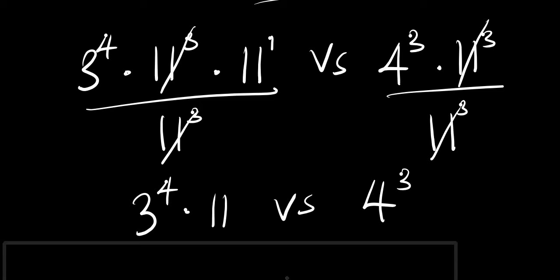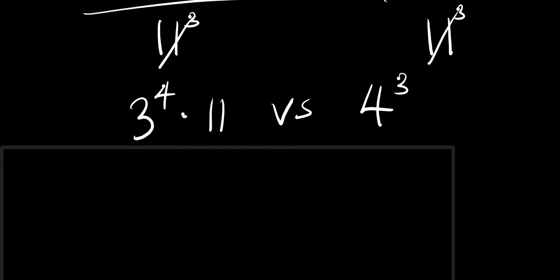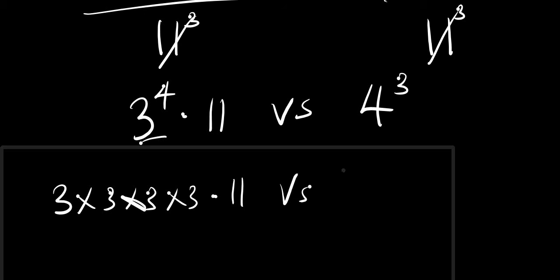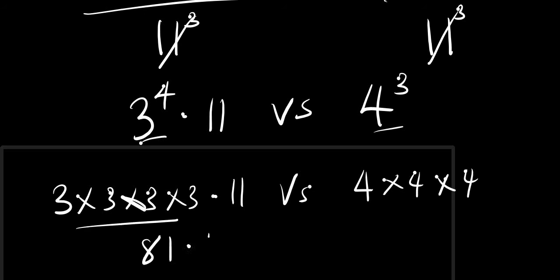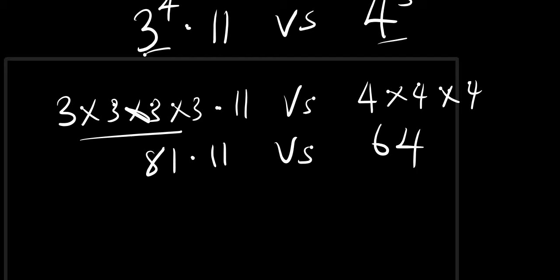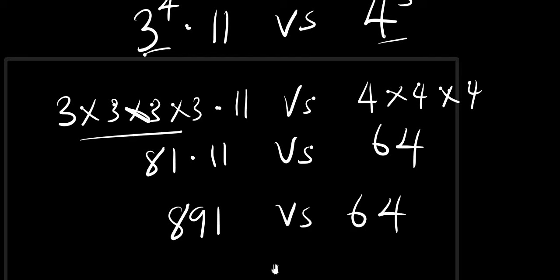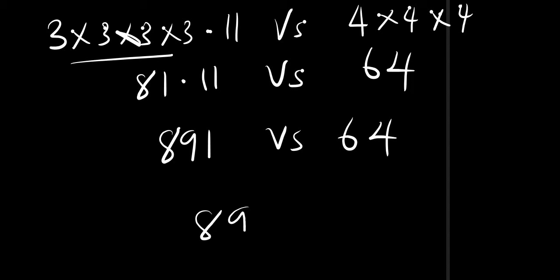Now, 3 raised to the power of 4 means 3 times 3 times 3 times 3, multiplied by 11. Meanwhile, 4 raised to the power of 3 means 4 times 4 times 4. This gives us 81 times 11 versus 64. So 81 times 11 equals 891, versus 64.